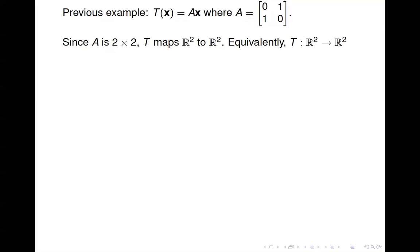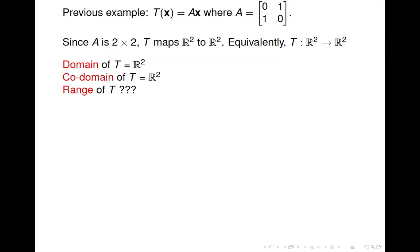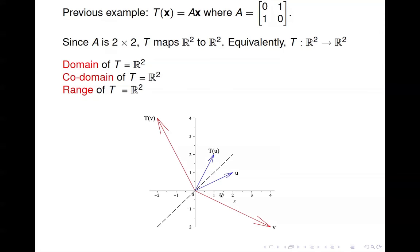Back to our previous example: this transformation maps R2 to R2, so the domain is R2 and the co-domain is also R2. For the range, think of it as everything that gets mapped to under this transformation. Since this transformation just reverses the order of elements, you can produce any vector in R2 by reversing its components. So the range of this transformation is all of R2 — the co-domain and the range are equal in this case.